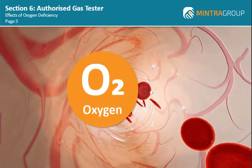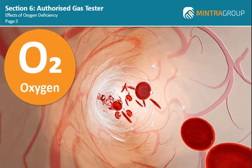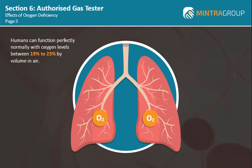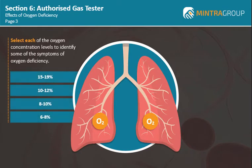Oxygen is absorbed into the bloodstream and circulates around the body to our vital organs. However, the amount of oxygen available in the atmosphere can have different effects on us. Usually, humans can function perfectly normally with oxygen levels between 19% to 23% by volume in air. Select each of the oxygen concentration levels to identify some of the symptoms of oxygen deficiency.